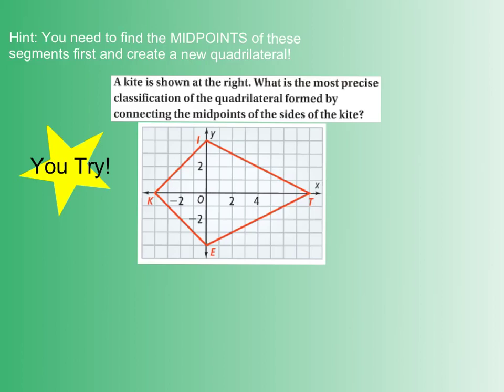And then this last example goes back to that second learning objective I mentioned to you. It says, a kite is shown at the right. What is the most precise classification of the quadrilateral formed by connecting the midpoints of the sides of the kite? So they don't want you to use this kite. They told you it's a kite. They want you to find each of the midpoints, the exact midpoint of those lines. They want you to connect them, see what kind of shape you get, and then use that shape, and do what you just had to do from the last couple examples. Determine, do they have all congruent sides? Does it have perpendicular diagonals? Are the diagonals congruent? You have to determine what shape it is.